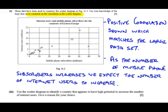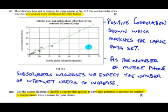In the next part we use the scatter diagram to identify a country that appears to have high potential to increase their number of internet users. I've put on a rough line of best fit to indicate where we'd expect countries to be in terms of mobile phone subscribers and internet users. Internet users are on the vertical axis — I'm looking for the country with the most room to improve, and I can see one country that has a lot of space to grow.